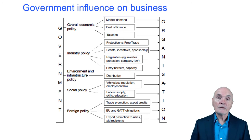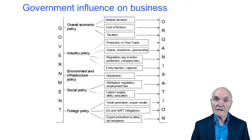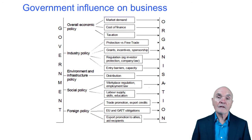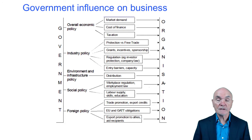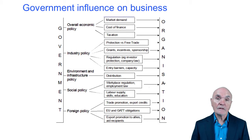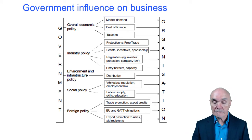Also, social policy will look at the training which is provided by government — the schools, the technical colleges, the universities, and maybe subsidies given to train your staff. And then there is foreign policy — the government can get involved in trade delegations to try to encourage exports. The government can provide export guarantees and export credits, so that if the foreign customer doesn't pay, the government insurance scheme will make sure you haven't lost everything.